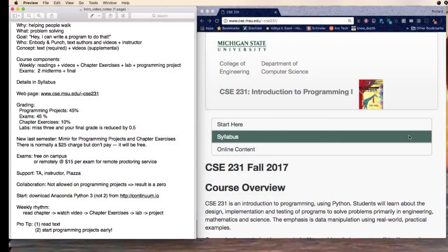So let's take a look at a couple of things here. Every week there is a pattern that you're going to have. You're going to do a reading, read a chapter, you're going to watch some videos, there are exercises online to be done for each chapter, there's a required lab and there'll be a weekly programming project. There are also two midterms and a final and the details are in the syllabus. Don't forget to read the syllabus, you will be held to whatever is in the syllabus.